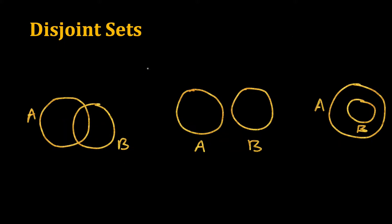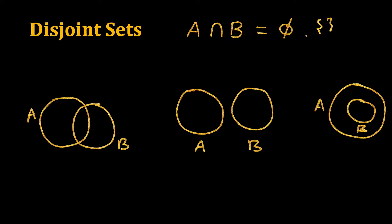If we have two sets A and B and there is no common element to A and B, that is if we take the intersection of A and B then it should be the null set or empty set — there is no element common to both.